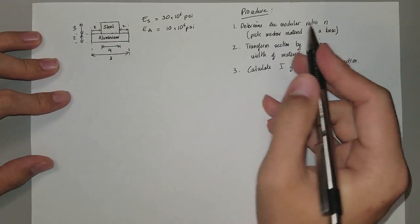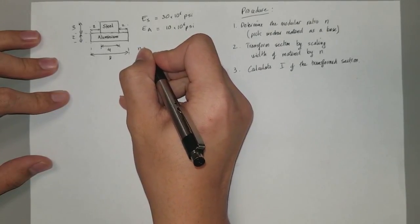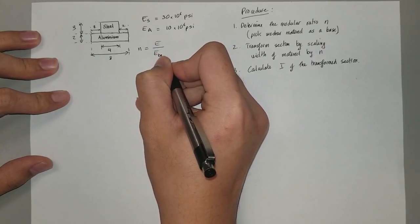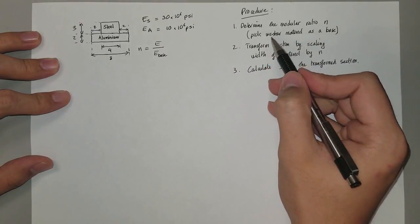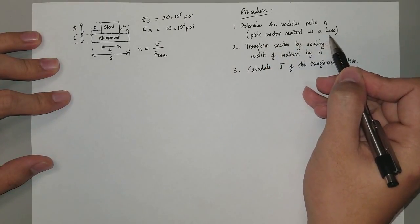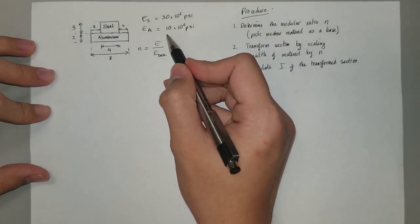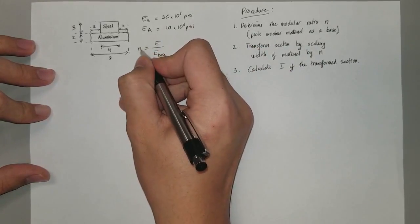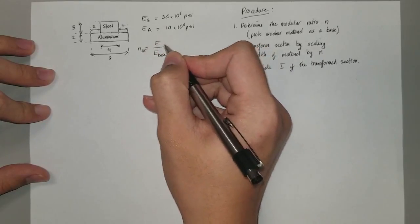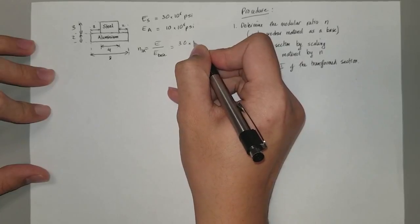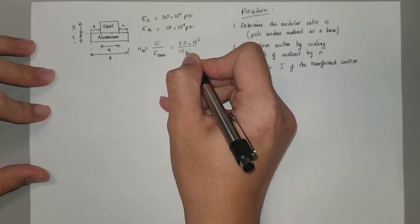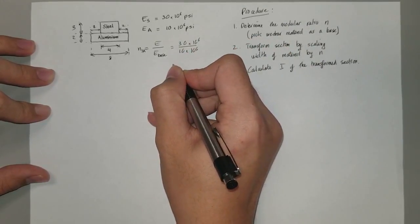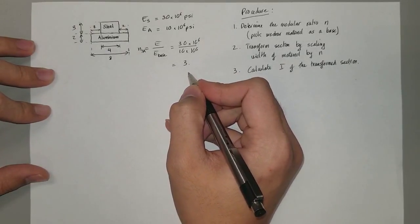First, we're going to determine the modular ratio. The modular ratio is calculated as E divided by E_base. As I said, we're going to pick the weaker material as a base — weaker meaning lower E. In this case, we pick aluminum as our base. So the modular ratio of steel over aluminum is 30×10⁶ divided by 10×10⁶, which gives you 3. That is our modular ratio.